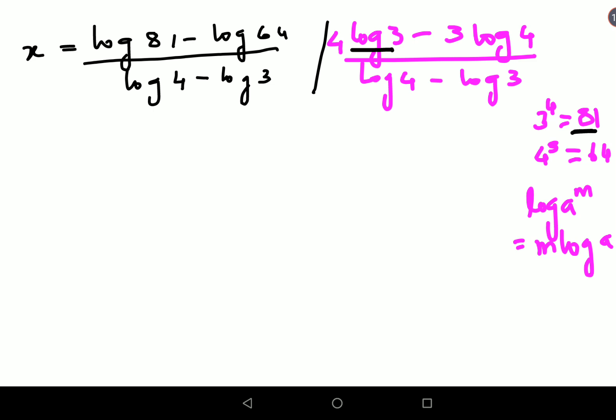Now if they have provided you with log books then you can very well find the value of log 81 which comes out to be around 1.908 minus log 64 which is 1.806. Now lot of people think why don't I put the values over here. Yes you can do that as well because you just need to find the value of log 4 and log 3, rest everything has to just get multiplied by 4 and 3 in the numerator. Eventually both the values will come out to be same.